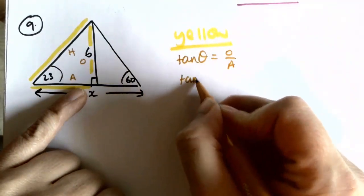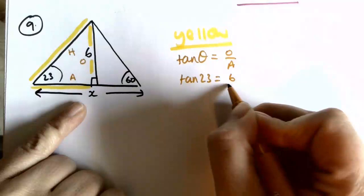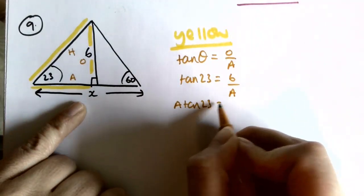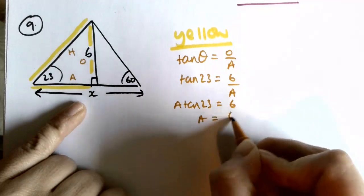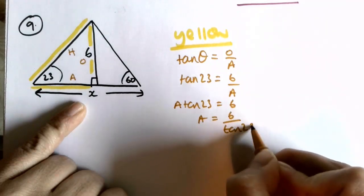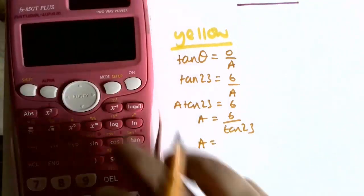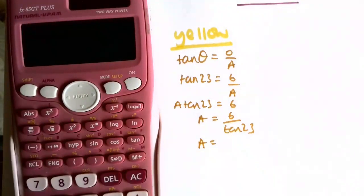So tan of 23 equals 6 over A, so A tan of 23 equals 6, so A is 6 over tan of 23, which gets 14.14.